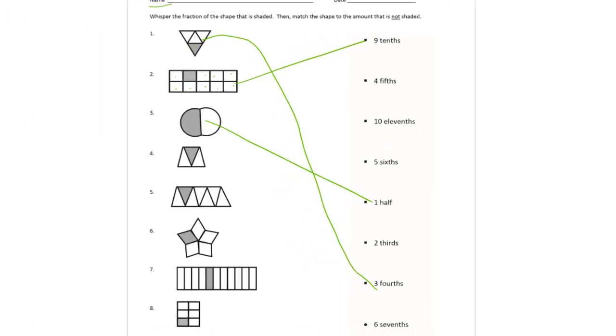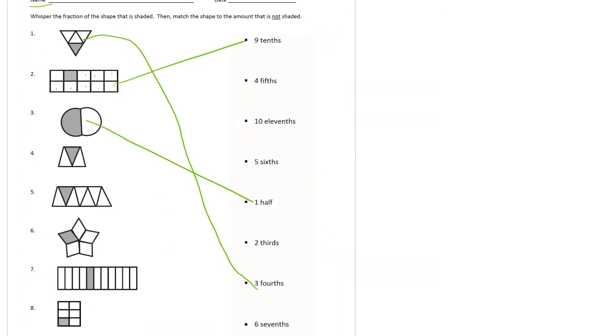Almost halfway done. This middle one, number 4, has 3 parts, so we're looking for thirds. Our unit fraction will be 1 third, and it's 1 third shaded in. 2 thirds are not shaded in. Here we go, 2 thirds. Now that one's matched up.